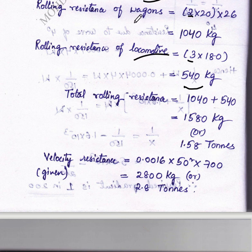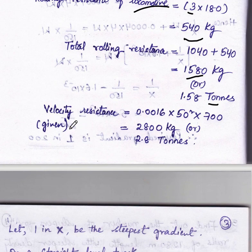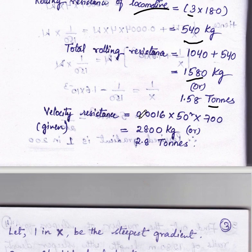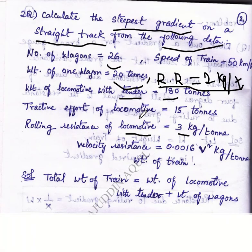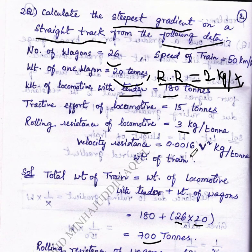Total rolling resistance can be converted into tons by dividing by 1000. Next step is velocity resistance, given in the question as velocity resistance equals 0.0016 V squared kilograms per ton.